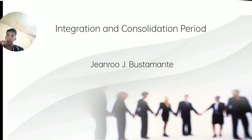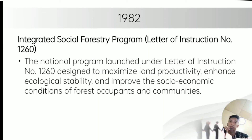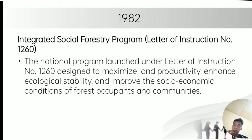Integration and consolidation period: in 1982, the Integrated Social Forestry Program under Letter of Instruction Number 1260 was designed to maximize land productivity, enhance ecological stability, and improve the socio-economic conditions of forest occupants and communities through the issuance of a civil tenurial agreement. Participants in the program are granted the right to inhabit and develop forest lands for a term of 25 years, renewable for another 25 years.